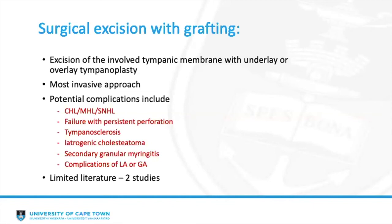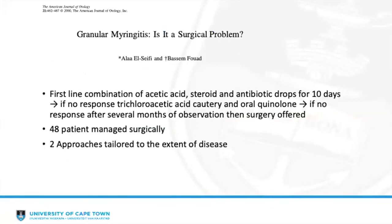There are only two studies in the literature regarding surgical approaches, both relatively old. The oldest, published in 2000, used a combination of acetic acid, steroid, and antibiotic drops first-line for 10 days with micro-cleaning every two to three days. If there was no response, cautery with 50% trichloroacetic acid and a systemic course of fluoroquinolones was trialed. If this failed, after an observation period of a few months, patients were offered surgery. In this study, 48 patients were managed surgically.